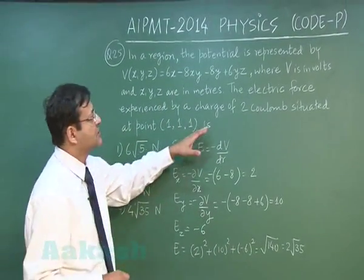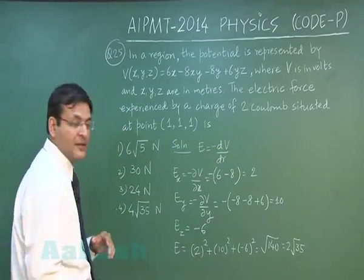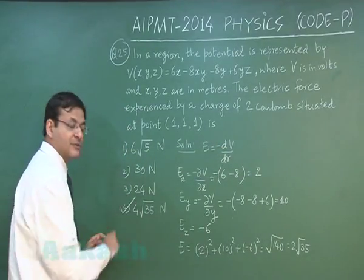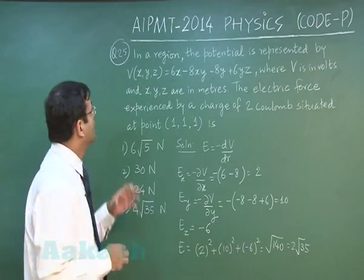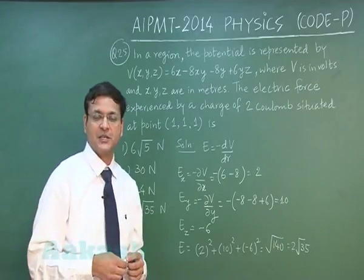Now if you multiply it by the value of charge which is given to be 2 coulomb, so that makes it 4√35 Newton. So the most appropriate answer for this question will be option number 4, and that explains question number 25. Now let us discuss the next question, that is question 26.